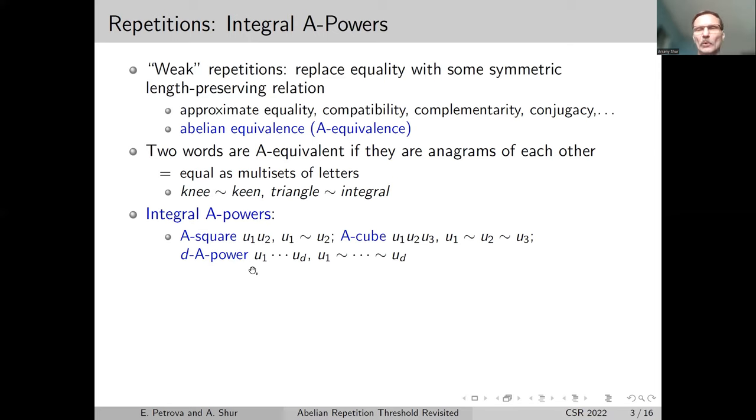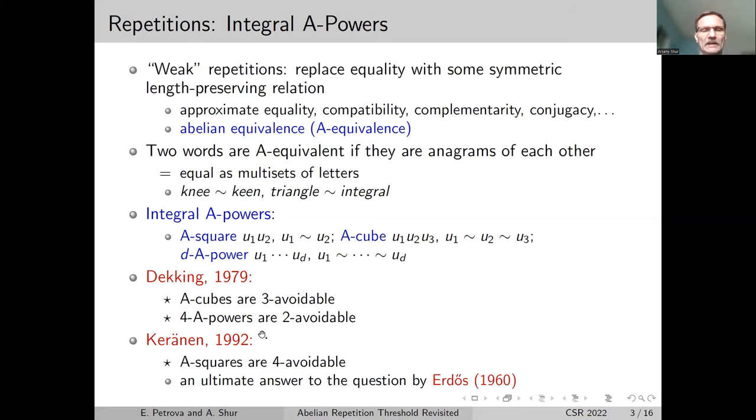We can ask the same questions about avoidability. The answer was done partially by Dekking, who proved that A-cubes are 3-avoidable, and A-4-powers are 2-avoidable. This was completed by results by Keränen, who proved that A-squares are 4-avoidable. In fact, the original question by Erdős about abelian squares was just, is there any finite alphabet which allows one to avoid abelian squares? And it appears that four letters are sufficient.